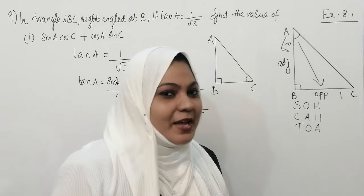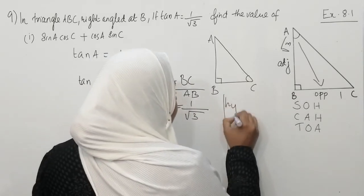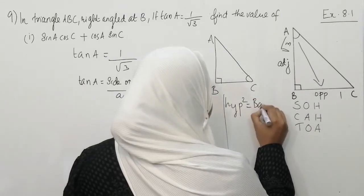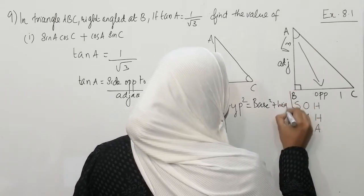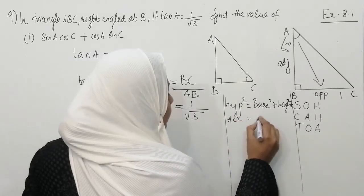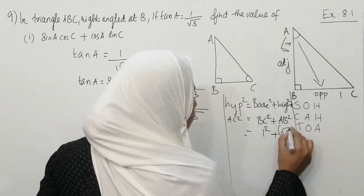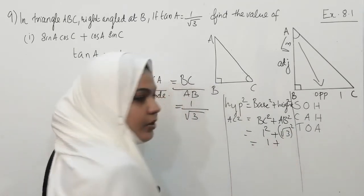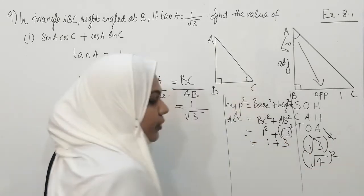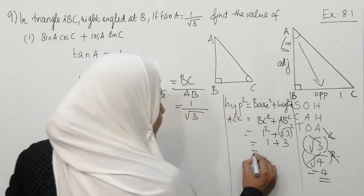In this triangle we know the height and base but we don't know the hypotenuse. We can find the hypotenuse using the Pythagorean theorem: hypotenuse squared equals the sum of the squares of base and height. So AC squared equals BC squared plus AB squared, which is 1 squared plus root 3 squared, giving 1 plus 3 equals 4. Therefore AC equals 2.